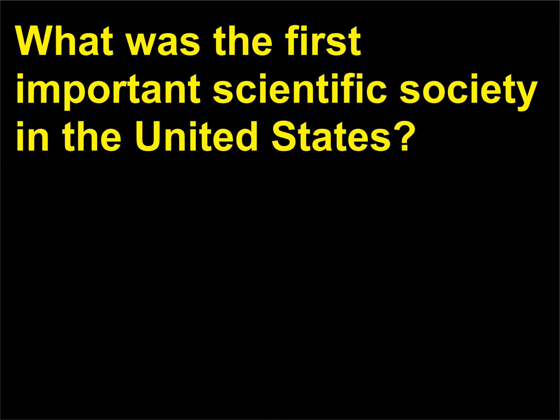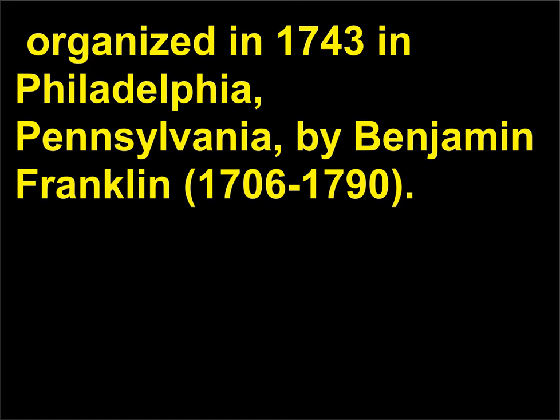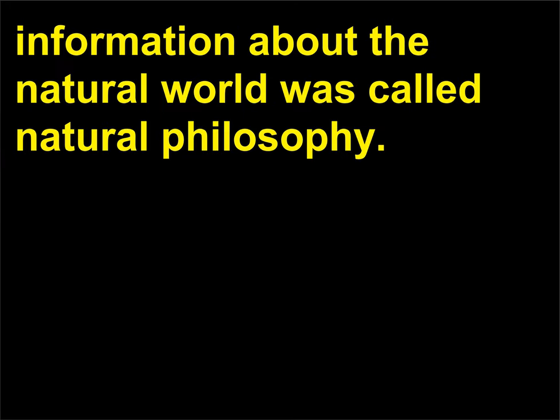What was the first important scientific society in the United States? The first significant scientific society in the United States was the American Philosophical Society, organized in 1743 in Philadelphia, Pennsylvania, by Benjamin Franklin (1706–1790). During colonial times, the quest to understand nature and seek information about the natural world was called natural philosophy.